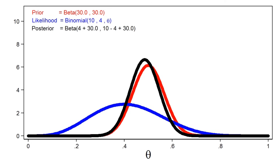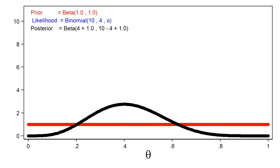Both the prior and the posterior have beta distributions. Here I've plotted the posterior distribution of theta along with the prior distribution and the likelihood function. Notice that the posterior closely resembles the prior distribution. This is because we used an informative prior and a relatively small sample size.